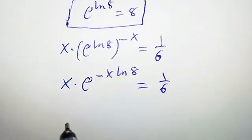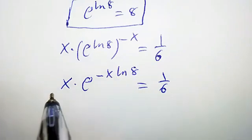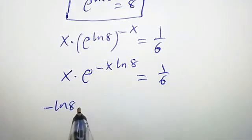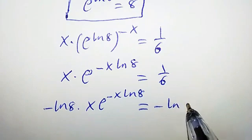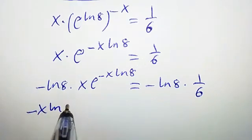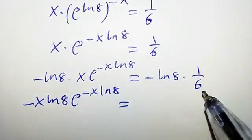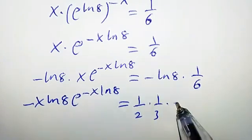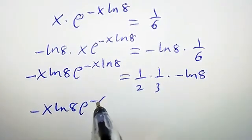Let us do some manipulation here. Suppose we want this to look like the Lambert W form. Let's multiply both sides by minus ln 8. So we are going to have minus ln 8 times x times e to the power of negative x ln 8 equal to minus ln 8 times 1 over 6. That gives us minus x ln 8 times e to the power of negative x ln 8 equal to — and we can rewrite 1 over 6 as 1 over 2 times 1 over 3 times negative ln 8.